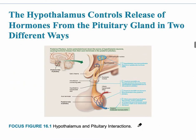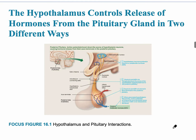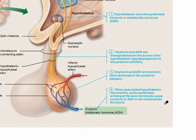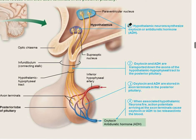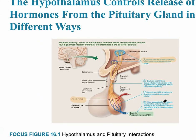This slide shows the interaction of the hypothalamus and the posterior pituitary. At the top, we see the hypothalamus, whose neurons synthesize oxytocin and antidiuretic hormone ADH. These are then stored in the axon terminals in the posterior pituitary gland and released when needed. This is a different mechanism than what occurs in the anterior lobe, the adenohypophysis.